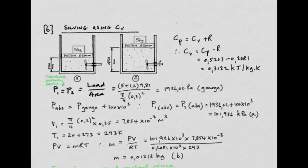Using the equation of state, we can find the mass of argon. PV = mRT, or m = PV/RT. Substituting: 101.936 × 10³ Pa × 7.854 × 10⁻³ m³, divided by 0.2081 × 10³ × 293 K, gives 0.01313 kg of argon.